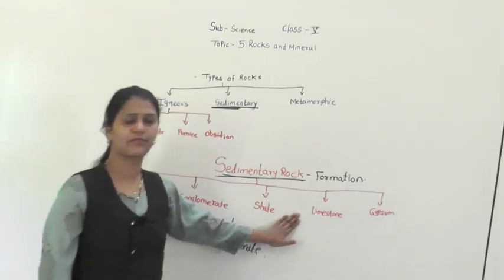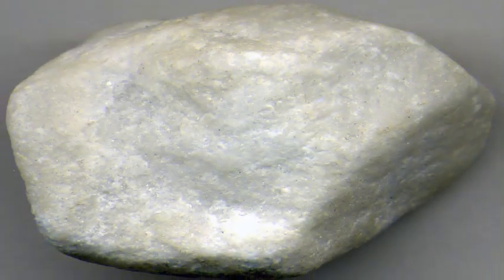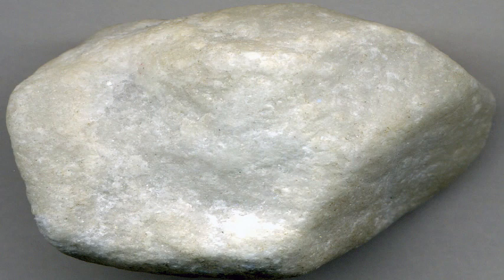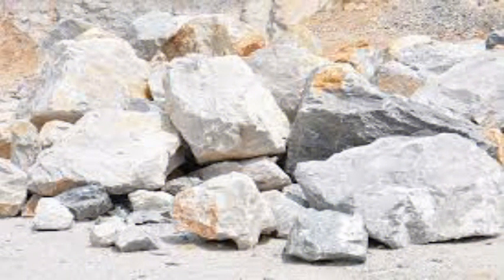The next type of rock is limestone. This rock is more familiar to you — it is used for making chalk. Limestone is made up of a mineral called calcium, and this mineral comes from the shells of sea creatures. Chalk is also known as limestone.